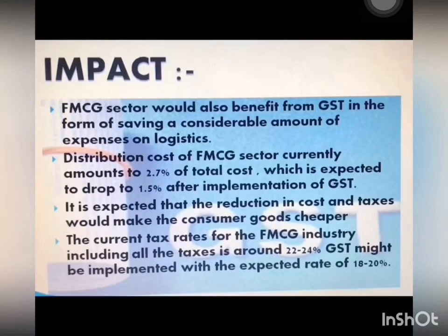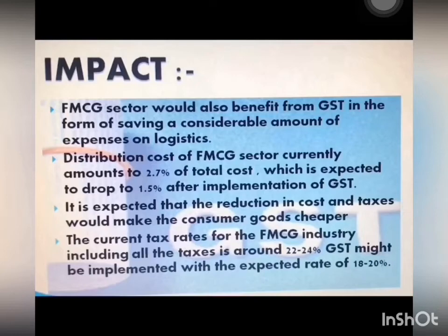Impact: The FMCG sector would benefit from GST in the form of saving a considerable amount on logistics expenses. The distribution cost of the FMCG sector currently amounts to 2.7% of the total cost, which is expected to drop to 1.5% after implementation of GST. As a positive impact, reduction in cost and taxes would make consumer goods cheaper, benefiting consumers and citizens. The current tax rates for the FMCG sector, including all taxes, are around 22–24%, and GST might be implemented with an expected rate of 18–20%. These are forecasted figures.